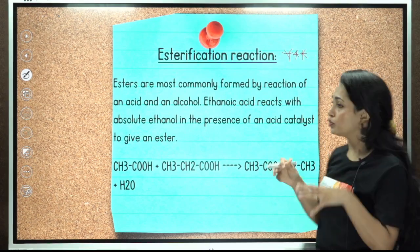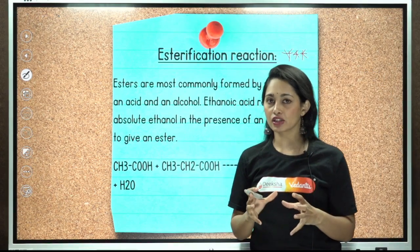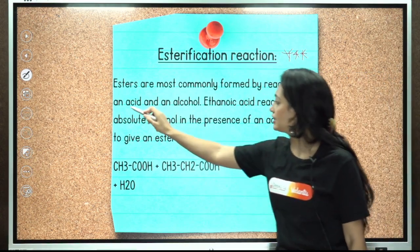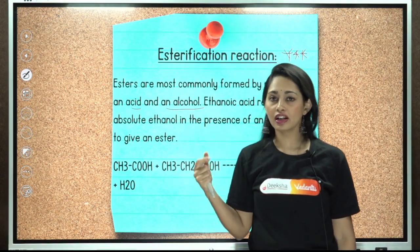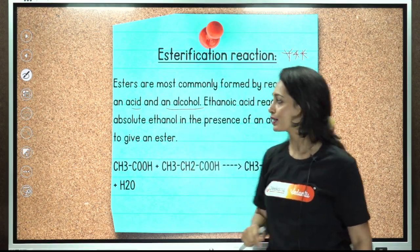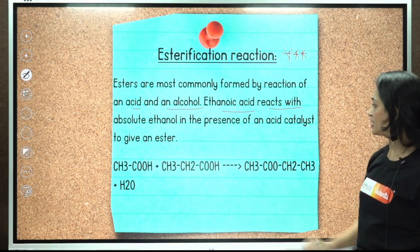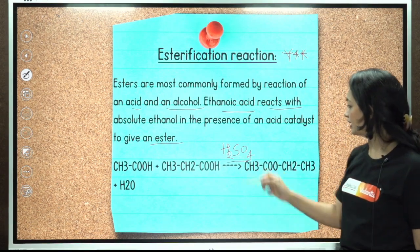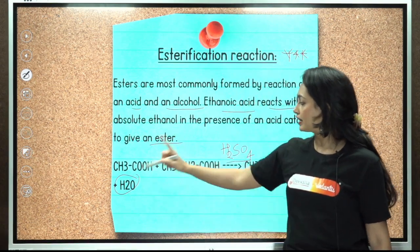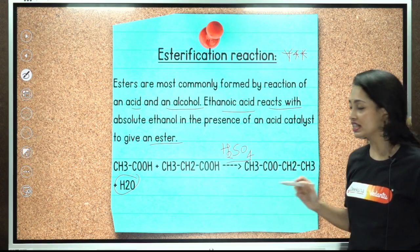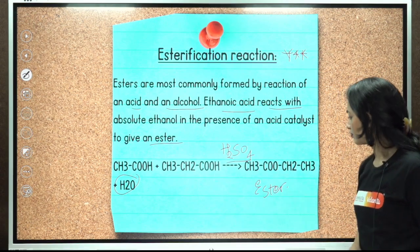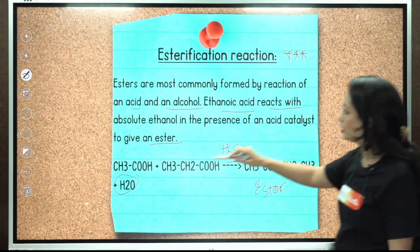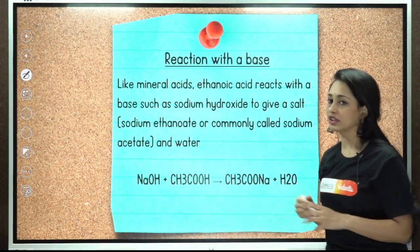The esterification reaction is very, very important — it is almost always asked in exams. Esters are most commonly formed by the reaction of an acid and an alcohol. Ethanoic acid reacts with absolute ethanol in the presence of an acid catalyst (H2SO4) to give an ester. A molecule of water is released. The product is ethyl ethanoate — this is the esterification reaction.